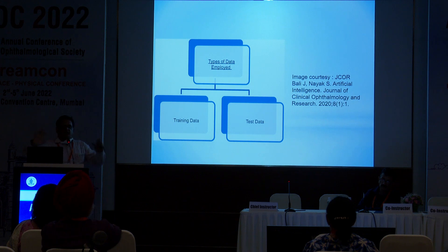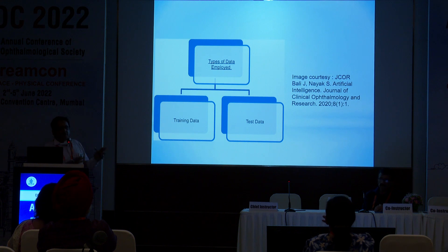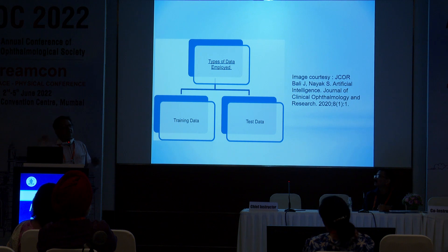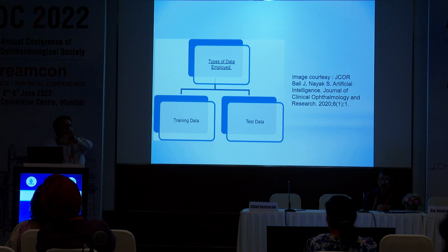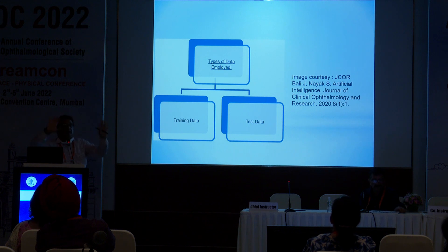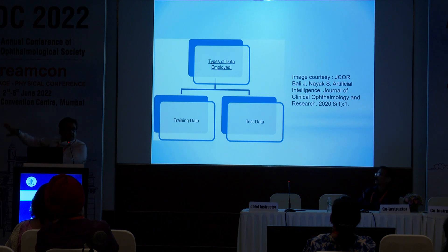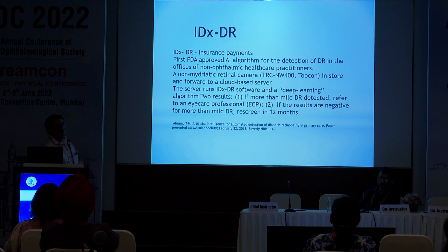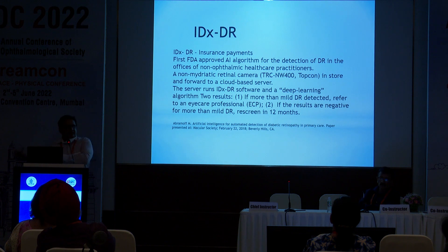When training a model, the entire dataset is split — typically 80/20 or 60/40 — with one part used to train and the remainder randomly held aside to test whether the trained model produces valid outcomes. This is training and testing within a dataset. When the developed algorithm is applied to an entirely different dataset or population, that is called generalizability.